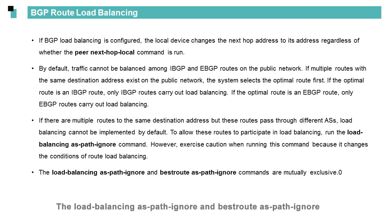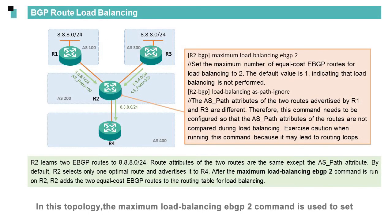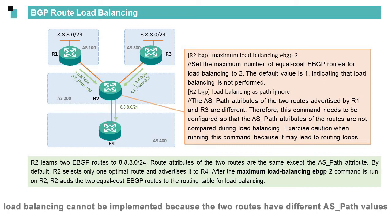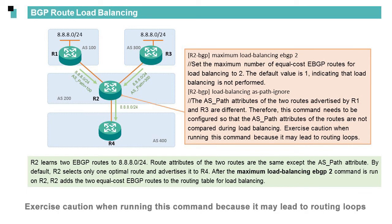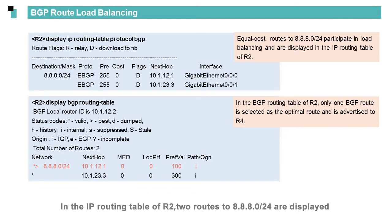The 'load-balancing as-path-ignore' and 'best-route as-path-ignore' commands are mutually exclusive. In this topology, the 'maximum load-balancing ebgp 2' command is used to set the maximum number of equal cost EBGP routes for load balancing on R2 to 2. However, by default load balancing cannot be implemented because the two routes have different AS path values. To allow the two routes to participate in load balancing, run the 'load-balancing as-path-ignore' command. Exercise caution when running this command because it may lead to routing loops. In the IP routing table of R2, two routes to 8.8.8.0/24 are displayed, implementing load balancing.